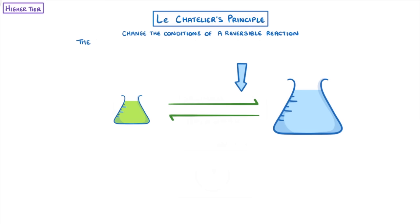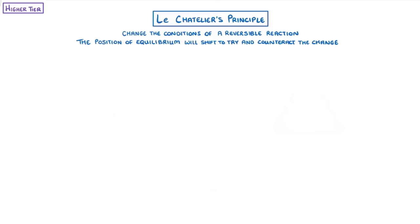Now, Le Chatelier's Principle is the idea that if you change the conditions of a reversible reaction, then the position of equilibrium will shift to try and counteract that change. And so we can use this principle to predict what will happen when we change the conditions.